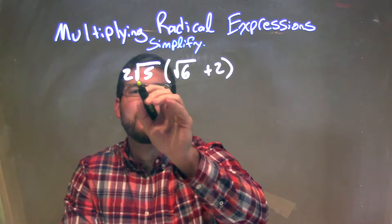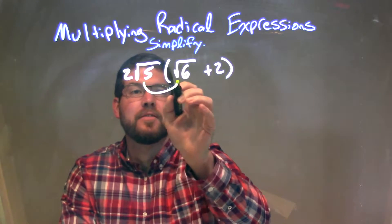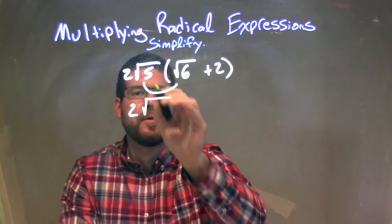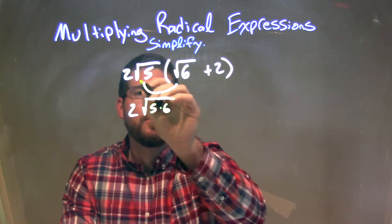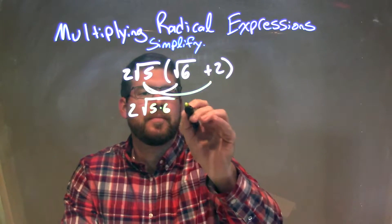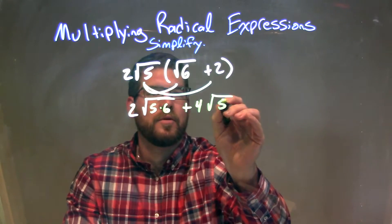So now I have to distribute the 2 square root of 5 to both parts. So 2 times the square root of 5 times the square root of 6 is just 2 times, and we combine it in 1 square root of 5 times 6. Then we multiply the 2 square root of 5 times the 2, 2 times 2 is 4, and then we're left with just the square root of 5.